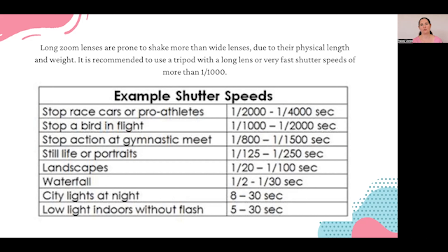That again depends on the species of birds and how fast they are flying. For gymnastics, if you want to stop the movement as they're doing their twists and other moves, you'll still want fast shutter speeds of probably over 1/800.